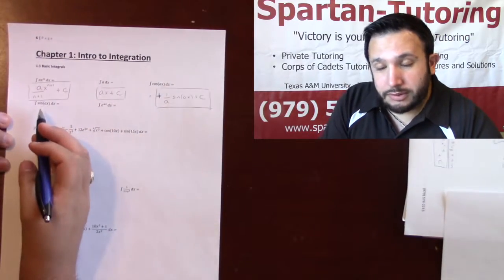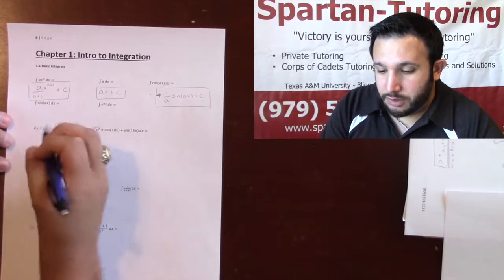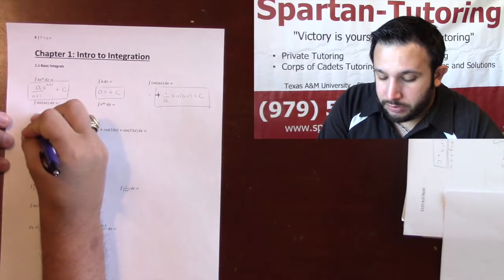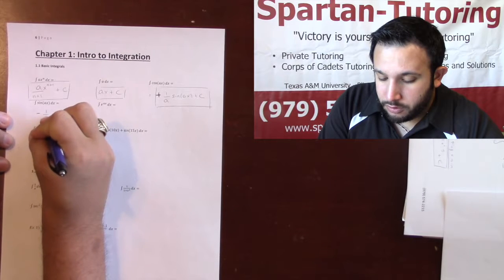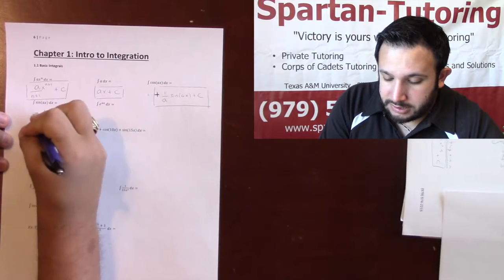And as for sine, we know the derivative of sine was a positive cosine. And so in this case, the anti-derivative or the integral of sine will be a negative 1 over a cosine of ax plus c.